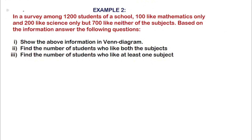Hello everyone, welcome back to our channel. In this video we will be discussing a second type of question related to sets. We have our question: there are 1200 students in a school, 100 of them like maths only, 200 of them like science only, and 700 like neither of the subjects. Based on this information, we have to show this in a Venn diagram, find the number of students who like both subjects, and find the number of students who like at least one subject.